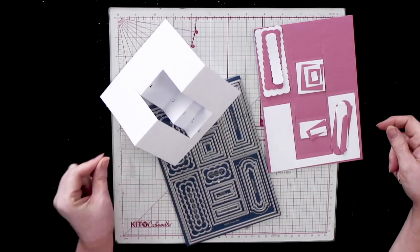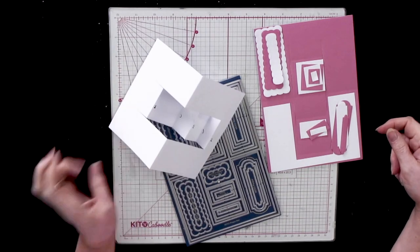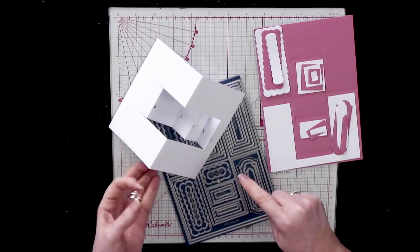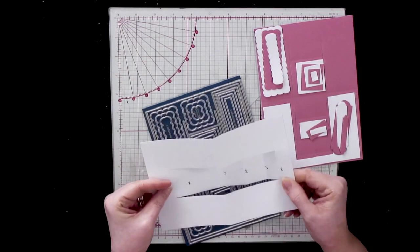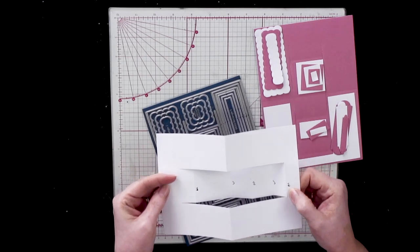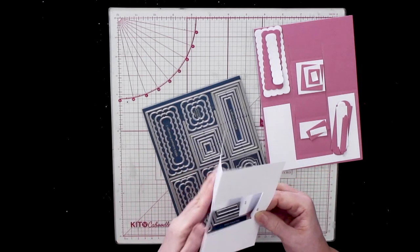Eventually we're going to end up with something that's folded like this, and I've written on it mountain and valley so I've got a reference to how it actually works.